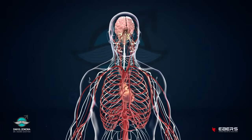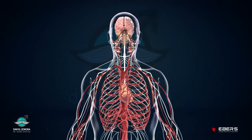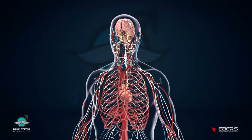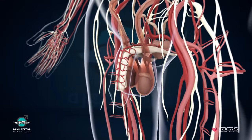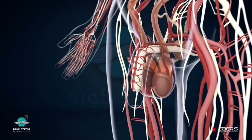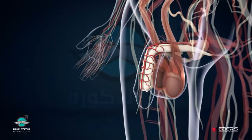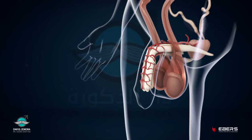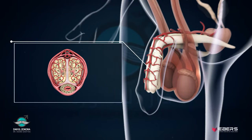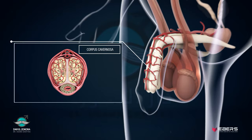Our circulatory system consists of arteries, veins, and capillaries. The penis is one of the unique organs that requires a continuous blood supply in order to maintain its reproductive function. It is composed of three cylindrical sponge tissues: two corpus cavernosa and one corpus spongiosum.